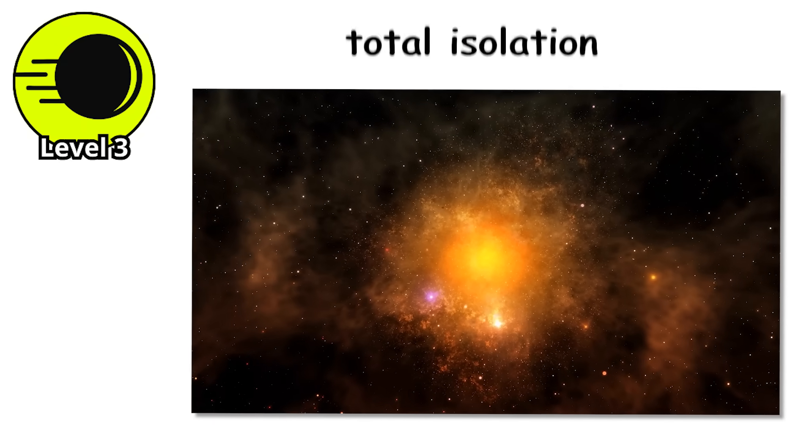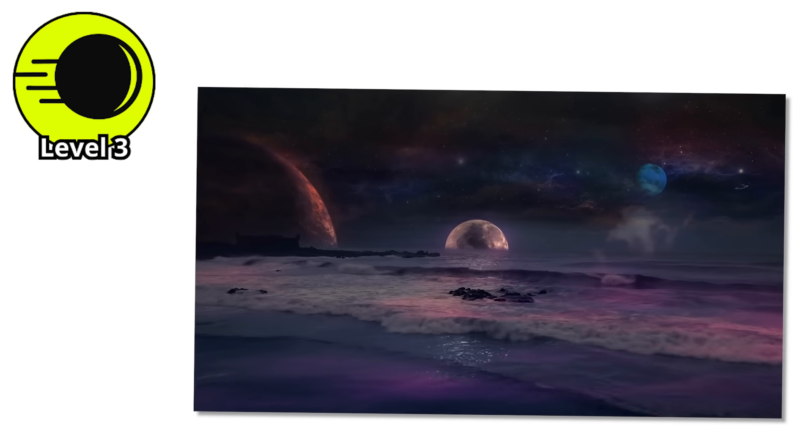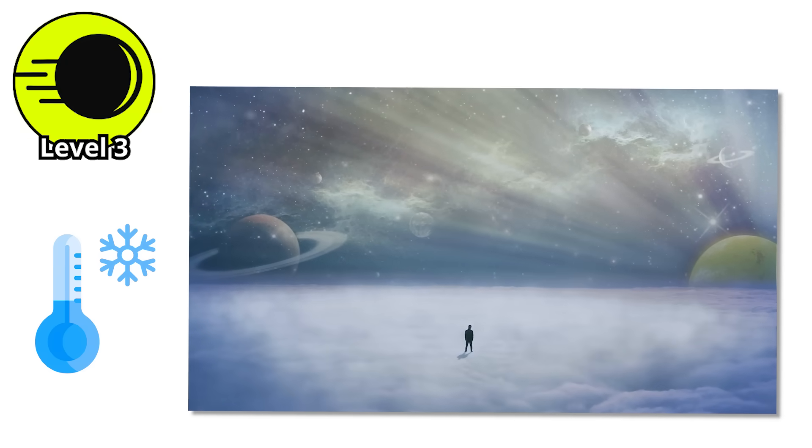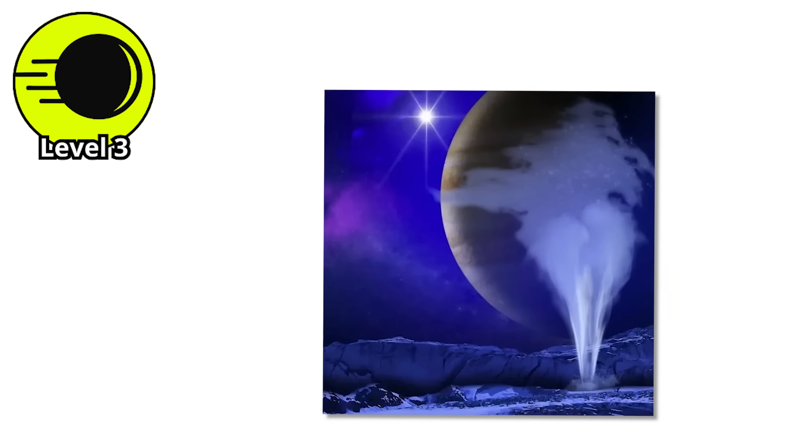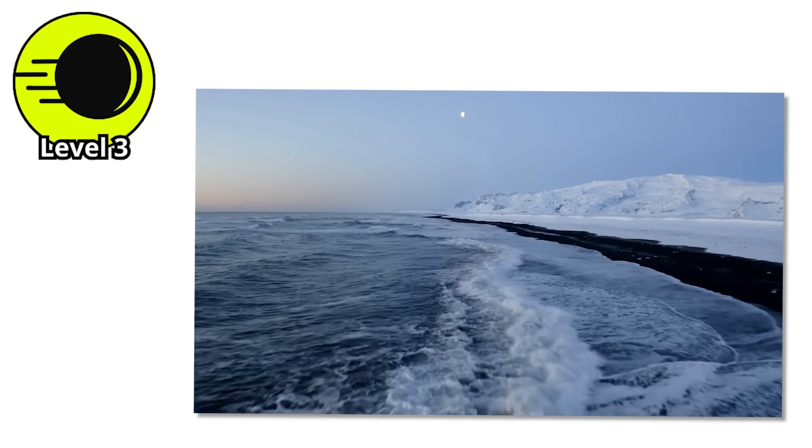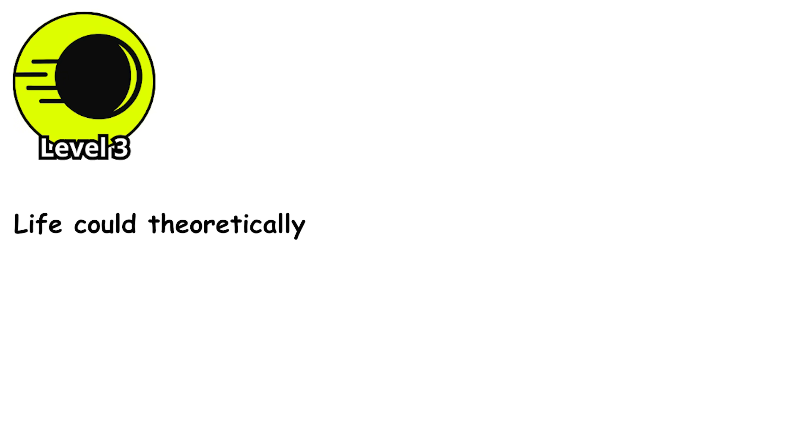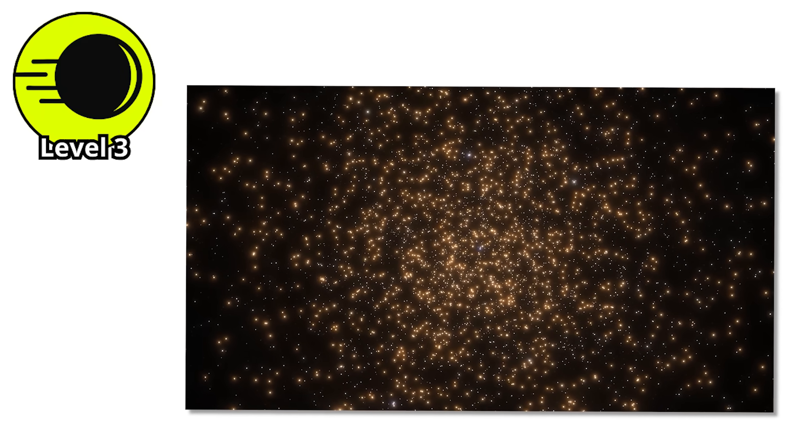These orphaned worlds drift through the galaxy in total isolation, their surfaces frozen into solid blocks of ice, their atmospheres collapsed and frozen solid on the ground. Any life that might have existed would be extinct within years as temperatures plummet to just above absolute zero. Except, here's where it gets fascinating. Large planets can stay warm from radioactive decay in their cores for billions of years. If they had subsurface oceans before ejection, those oceans might remain liquid beneath kilometers of ice. Warmed from below by the planet's dying heat, life could theoretically survive down there in those dark seas, completely cut off from the rest of the universe, existing in permanent night, never seeing a star, never knowing that stars even exist.